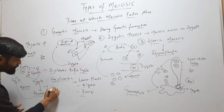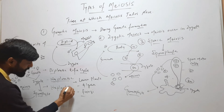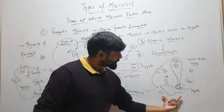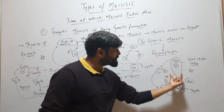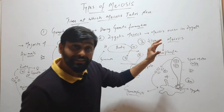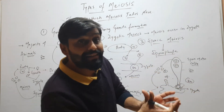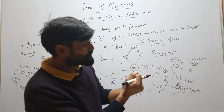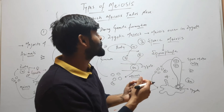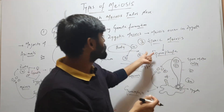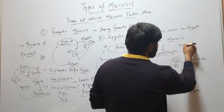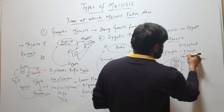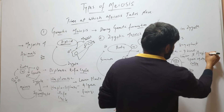This type of life cycle — where the gametophytic body forms gametes (male and female), they fuse to form a zygote, the zygote forms a sporophyte, and inside the sporophyte meiosis occurs to form spores that germinate into the gametophyte — is called a haplodiplontic life cycle. Both the gametophyte (N) and sporophyte (2N) are present. Sporic meiosis is found in higher plants like bryophytes, pteridophytes, gymnosperms, and angiosperms.